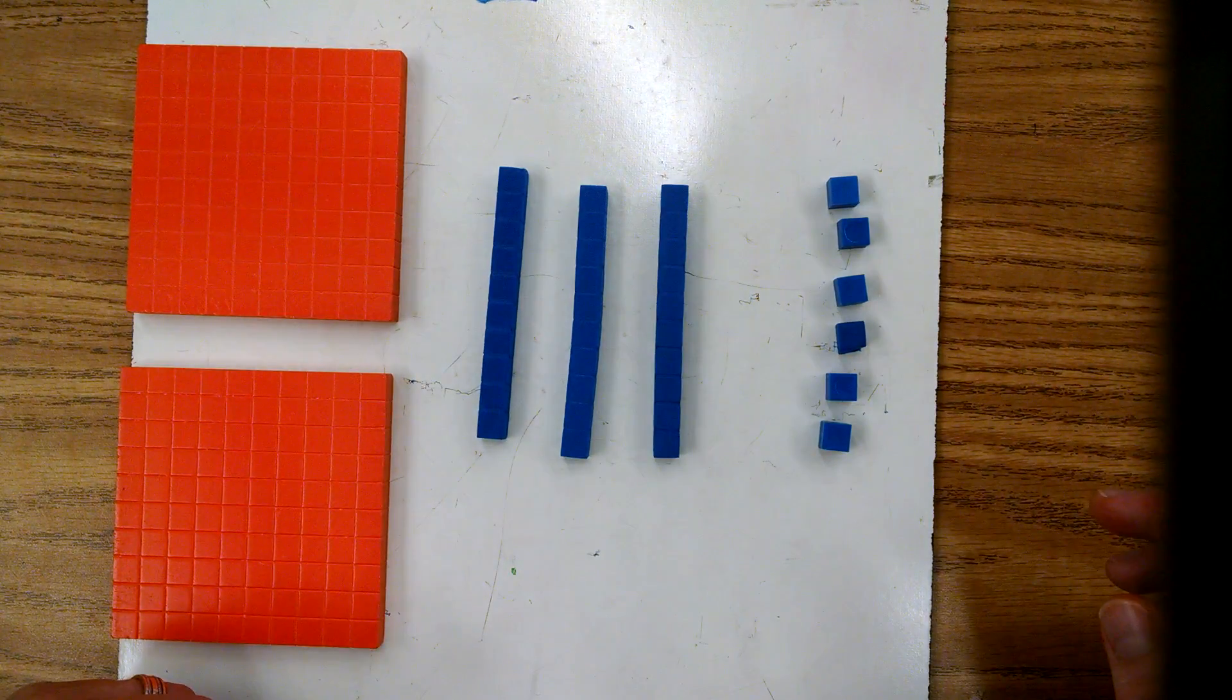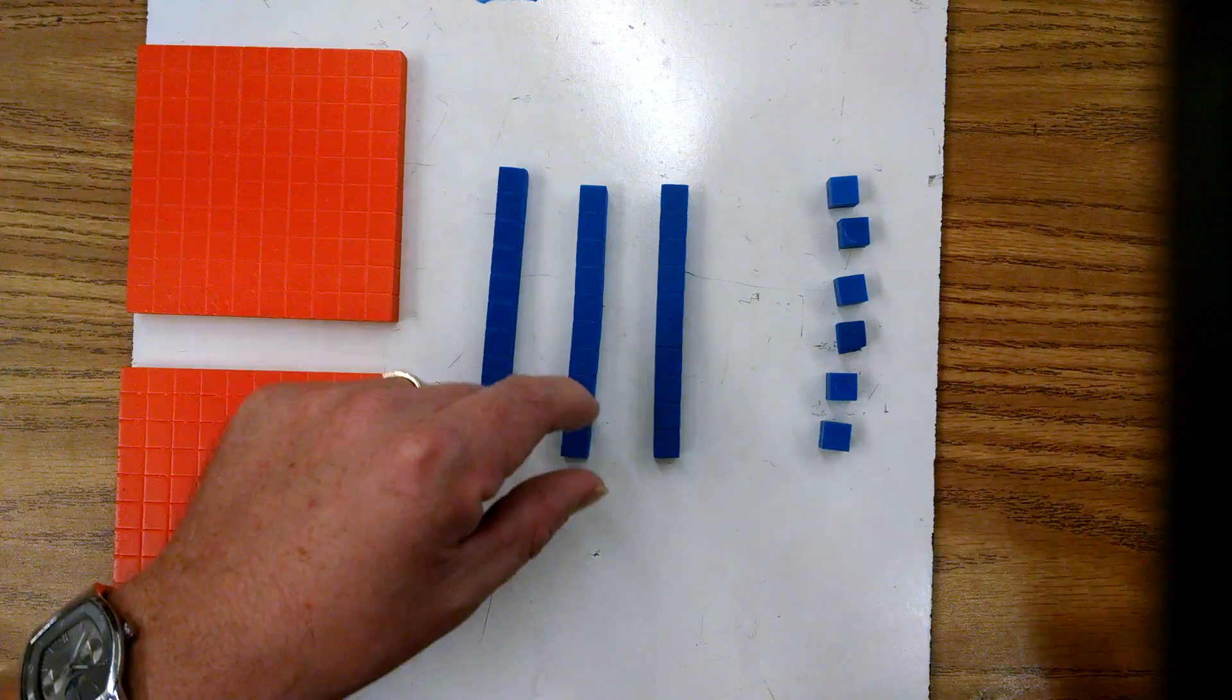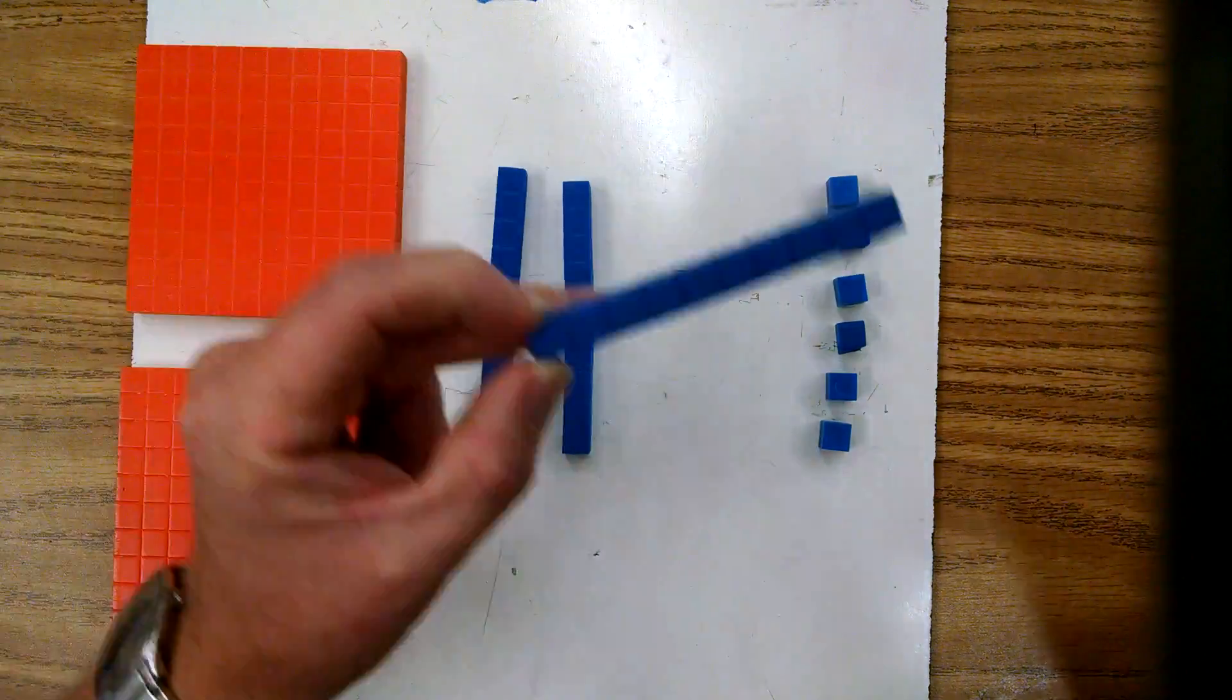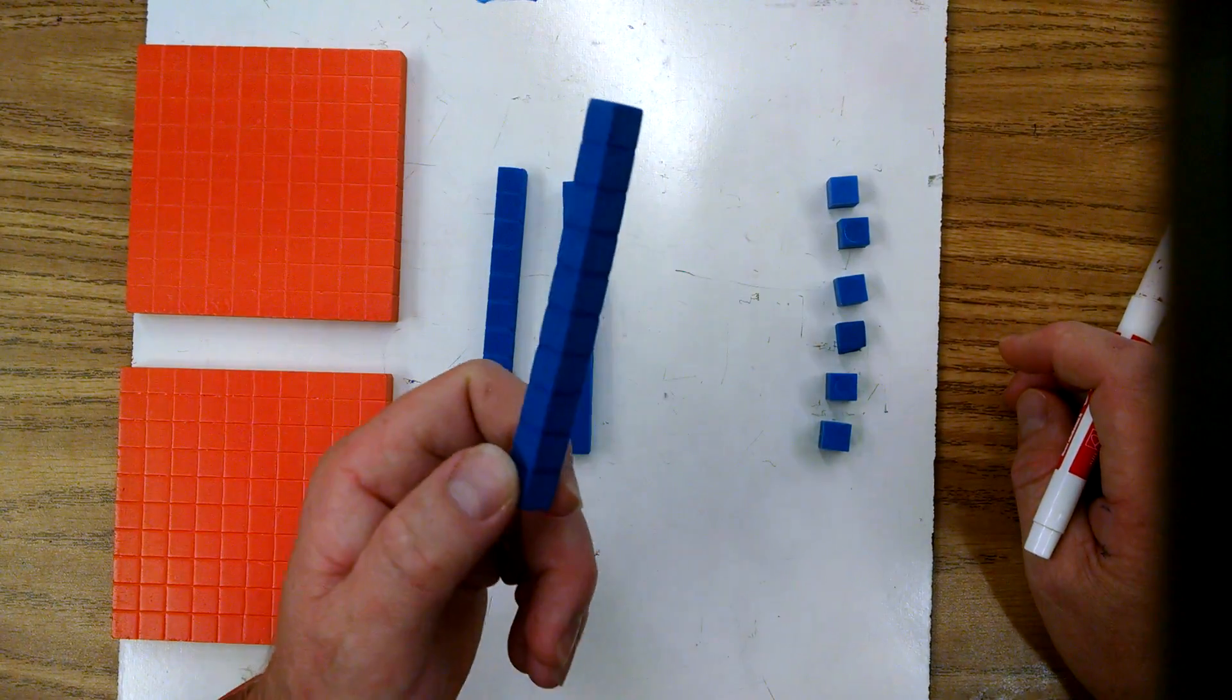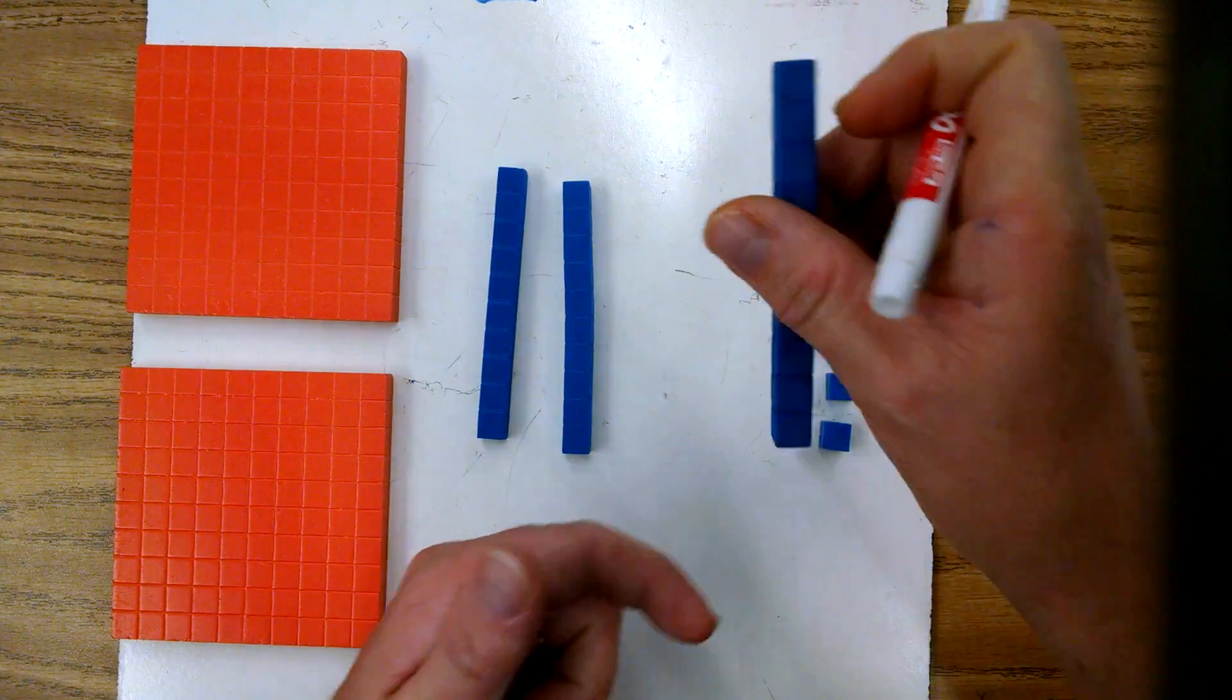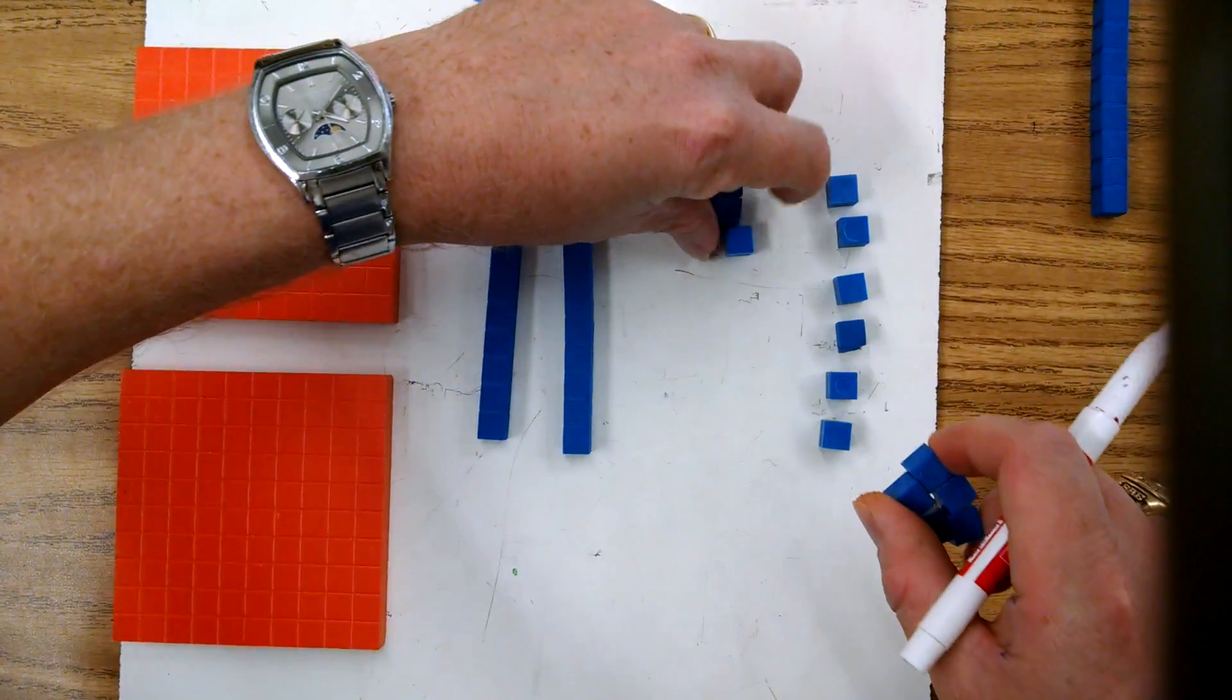But there are many other ways, there are different combinations of ones and tens that we can use to show this number. So let's start by trying to trade a ten in for ten ones. We don't call it trading so much anymore, the new terminology is decomposing. So we're going to decompose it or split it up into ten more ones, and I've got those ones right here.